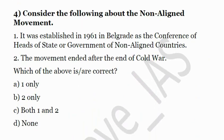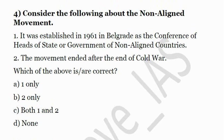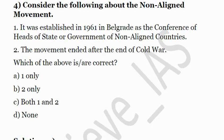The fourth question: Consider the following statements about the Non-Aligned Movement. First, it was established in 1961 in Belgrade as the Conference of Heads of State or Government of Non-Aligned Countries. Second, the movement ended after the end of the Cold War. We have to choose the correct statement. Only the first statement is correct — it was established in 1961 in Belgrade. The movement did not end after the Cold War; though its relevance has decreased, it still exists.